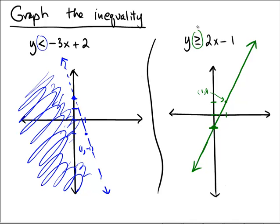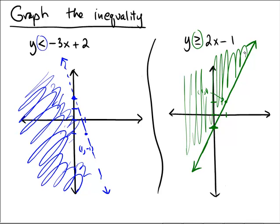Also, since this line is a bigger than, that means the shading is going to occur above. So I'm going to shade above that line, and there's the answer to this inequality.